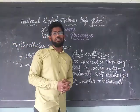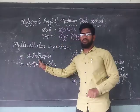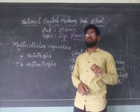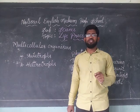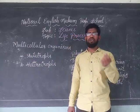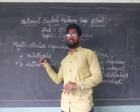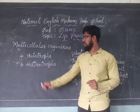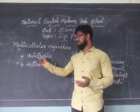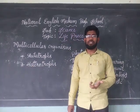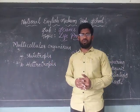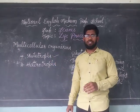Multicellular organisms have two types of nutrition: autotrophic nutrition and heterotrophic nutrition. Autotrophic nutrition means the nutrition in which organisms can prepare their own food — so they are called autotrophs, meaning self-food producers. Heterotrophs are organisms which cannot prepare their own food but depend directly or indirectly on autotrophs. Let's understand what type of nutrition takes place in autotrophs.